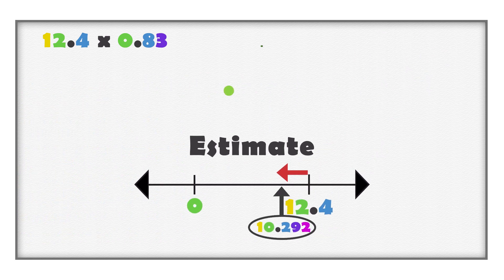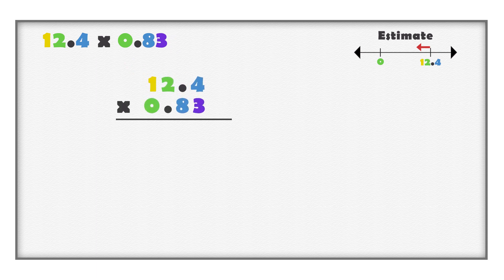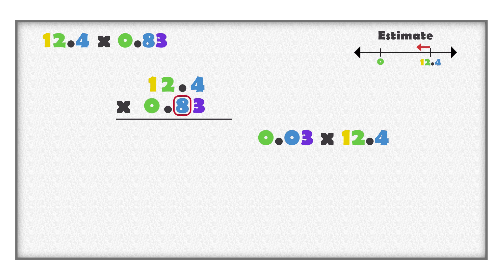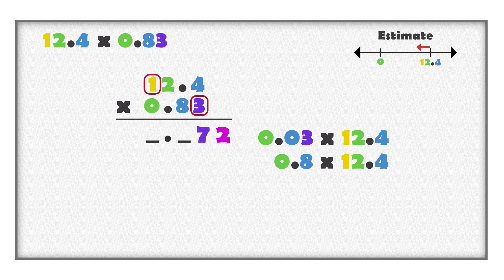How does this compare to our estimate? Use an algorithm to multiply these numbers. Line up the digits on the right. Multiply the digits of the second number with the first number. Multiply 3 hundredths with 12 and 4 tenths, and multiply 8 tenths with 12 and 4 tenths. When you multiply a hundredth with a tenth, you get thousandths; 3 hundredths multiplied with 4 tenths is 12 thousandths. When you multiply hundredths with ones, you get hundredths; 3 hundredths multiplied with 2 is 6 hundredths. We already have 1 hundredth; 6 more makes a total of 7 hundredths. When you multiply hundredths with tens, you get tenths; 3 hundredths multiplied with 10 is 3 tenths.